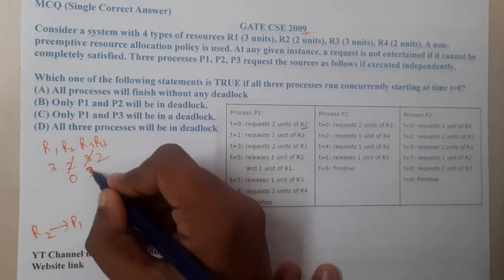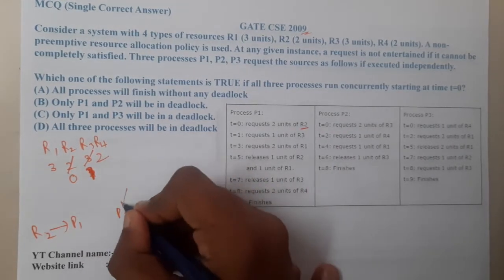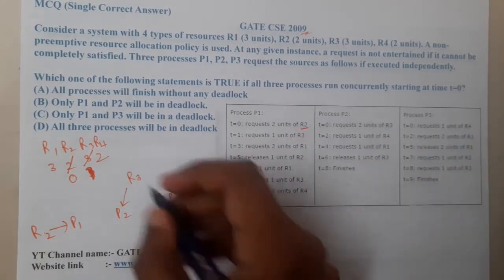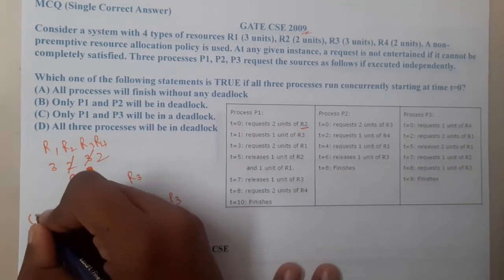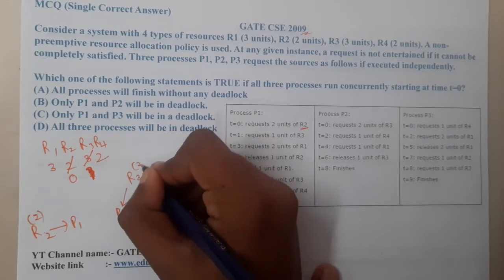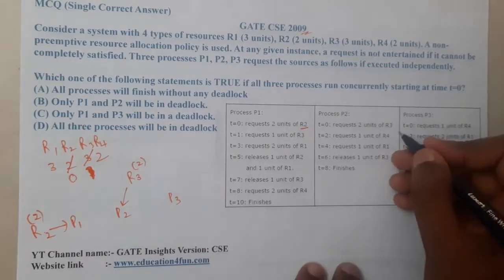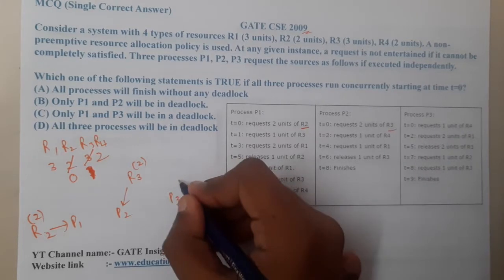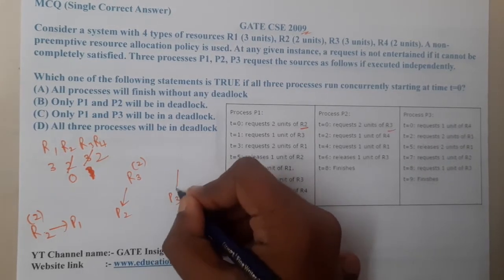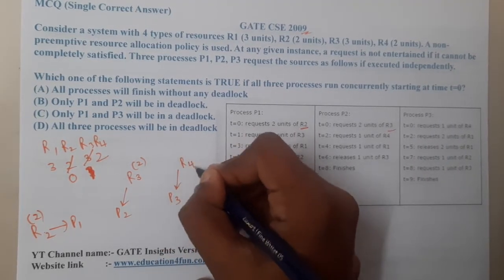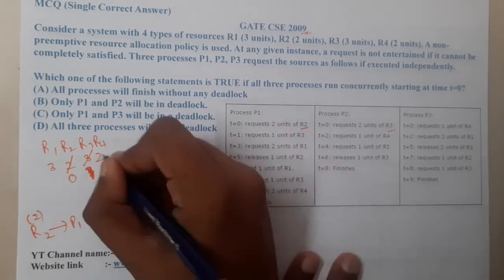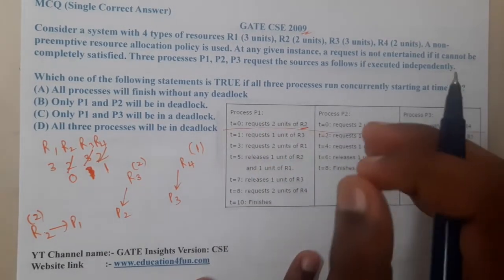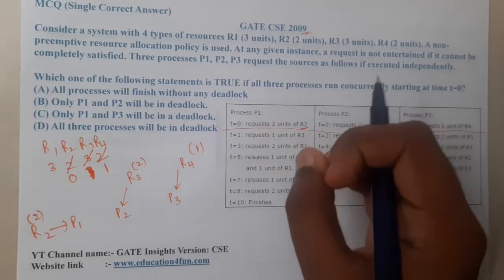Next, at time zero, P2 requests 2 units of R1 and already holds 2 units of R3 — both allocations are done. Also at time zero, P3 requests 1 unit of R4, which is allocated. So before hitting t1, the available resources are: R1=3, R2=0, R3=1, R4=1.